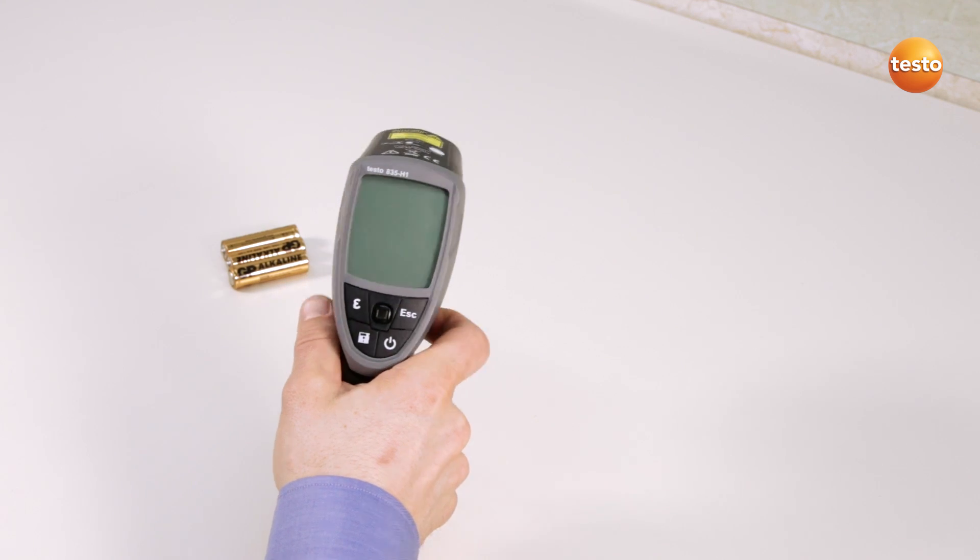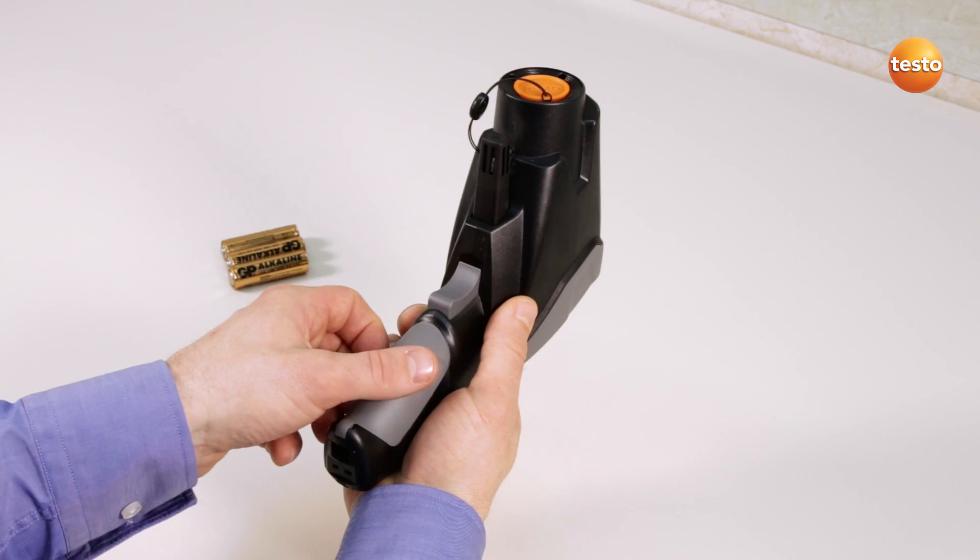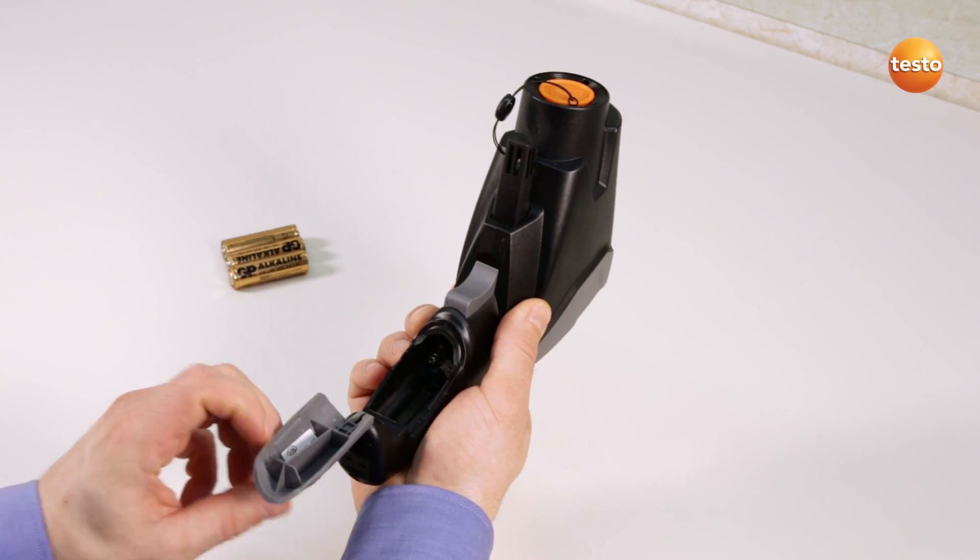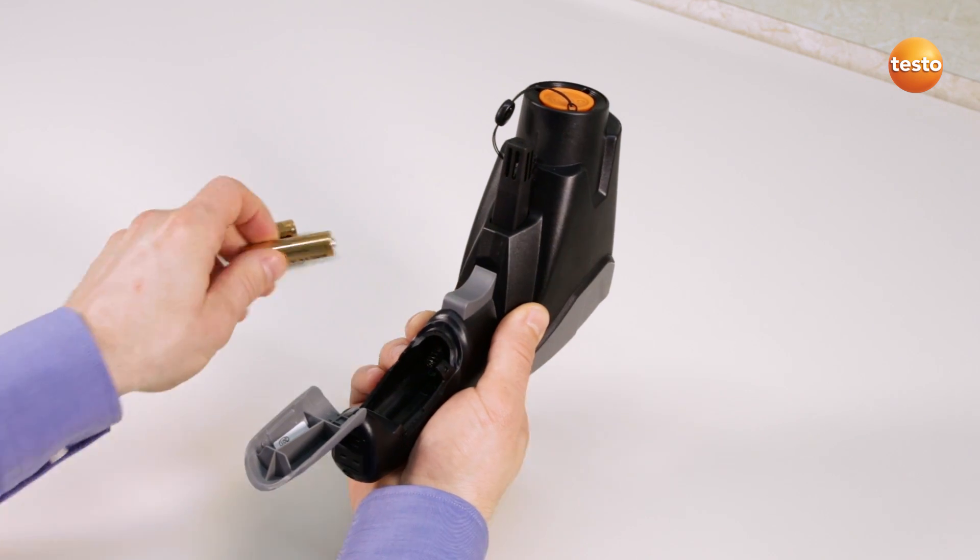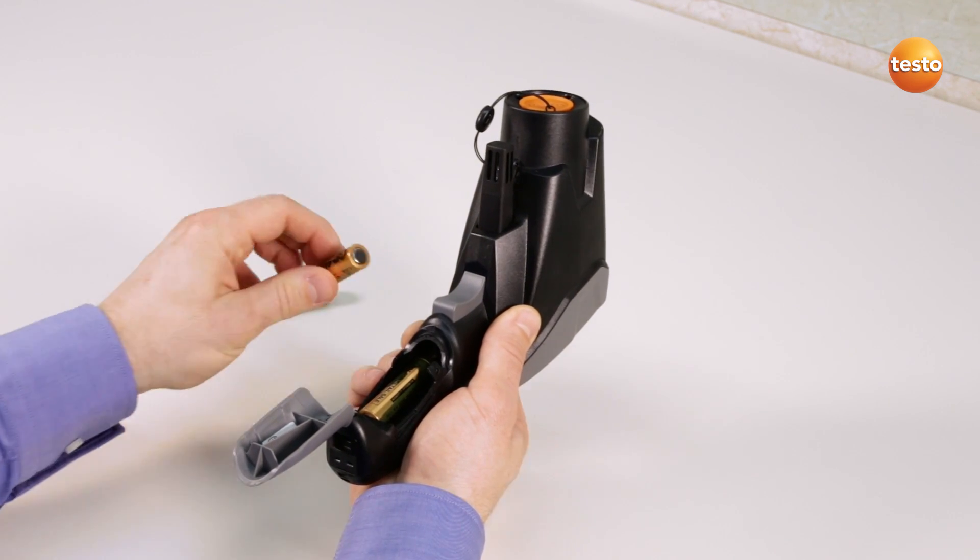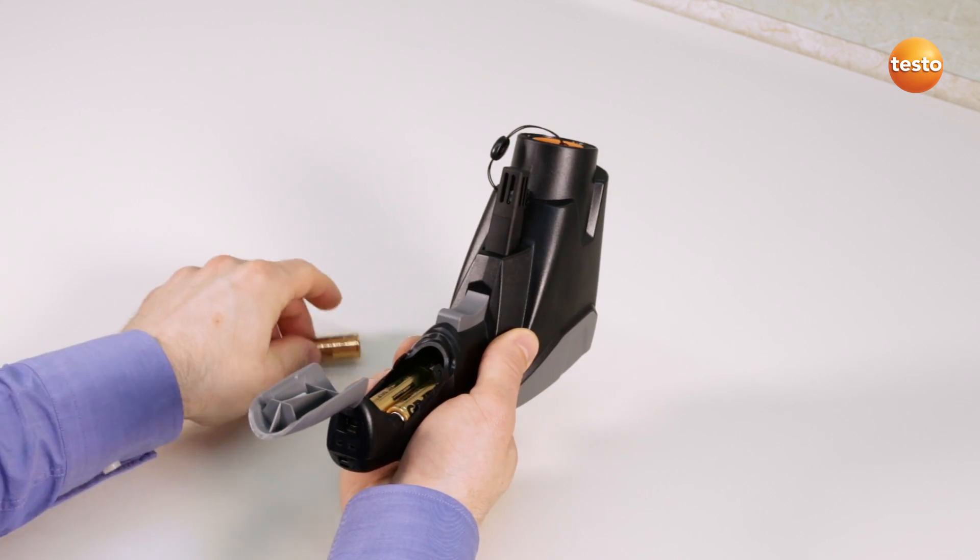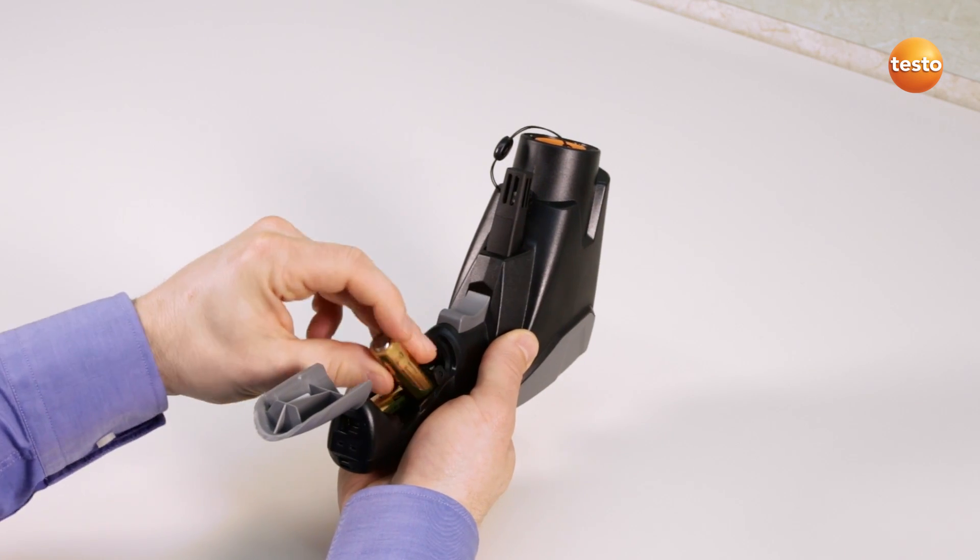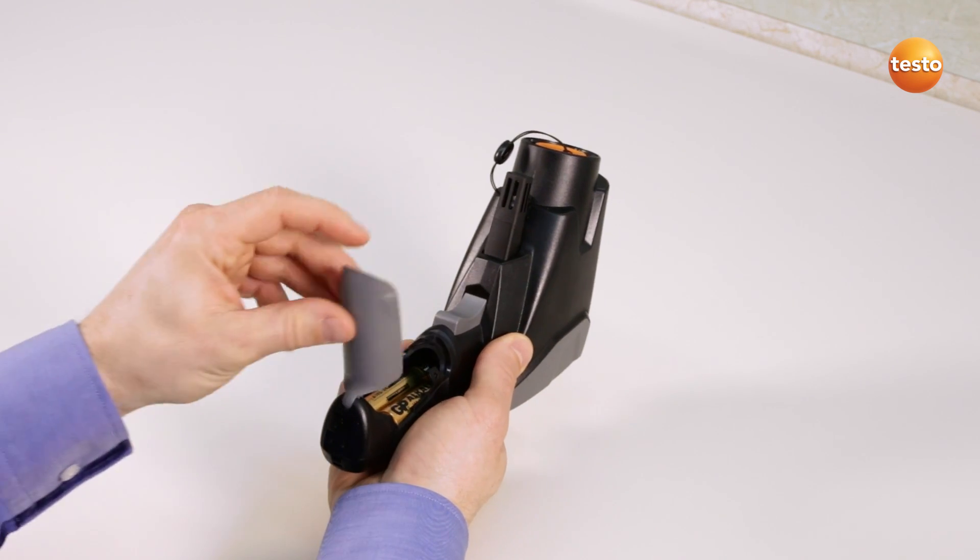We start by preparing the instrument. Turn the instrument over and open the battery compartment. Insert three conventional batteries into the battery compartment according to their polarity. Close the battery compartment again.